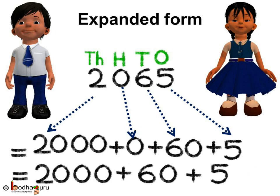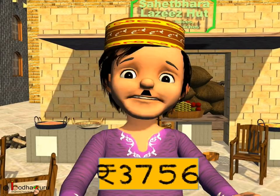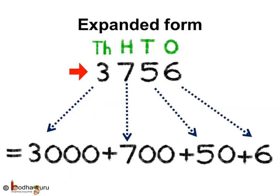Rahim earned 3756 rupees in the month of July. Write his earnings in expanded form. So, 3756 has 3 thousands, 7 hundreds, 5 tens and 6 ones. So, 3756 is equal to 3000 plus 700 plus 50 plus 6.